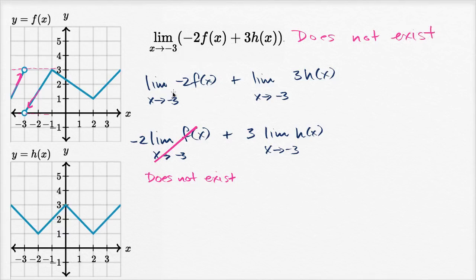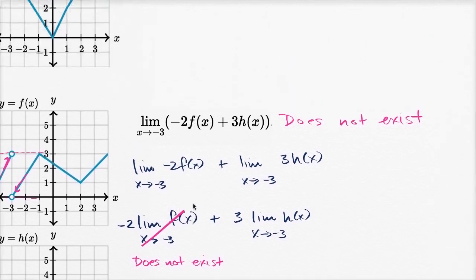The limit of h(x) here does exist, but since the limit of f(x) doesn't exist and we need it to evaluate the full expression, this whole combined limit does not exist. Each of the pieces need to exist in order for the scaled sum to actually exist. Let's do one more.